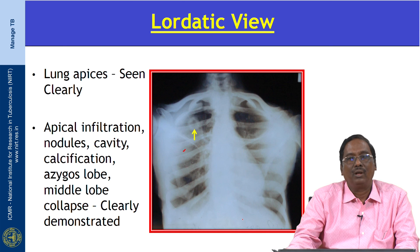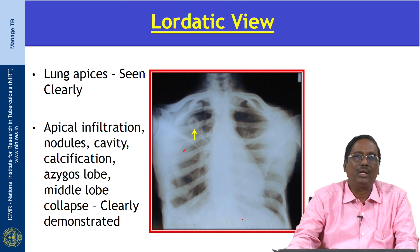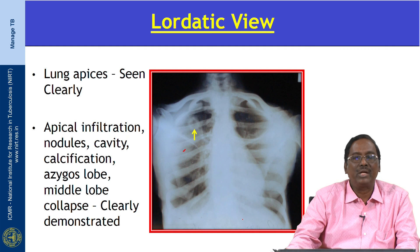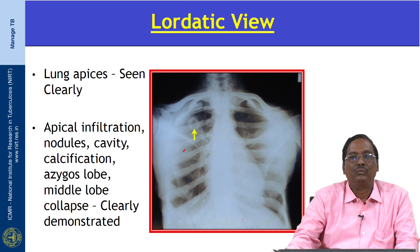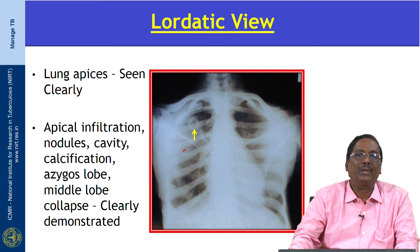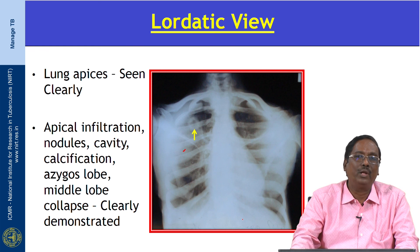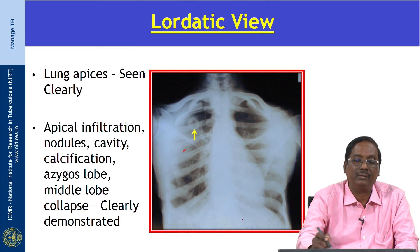Coming to the lordotic view — it is optional and not routinely done. If you want to see the apices, you can order a lordotic view, which is essentially an apical view. In a lordotic view, apical infiltration, nodules, cavities, calcifications, azygos lobe, and middle lobe collapse are clearly demonstrated.